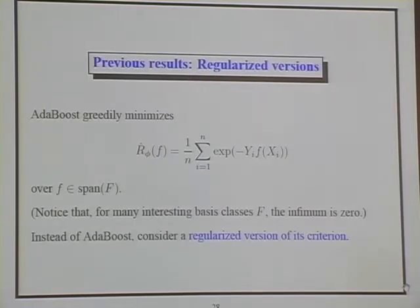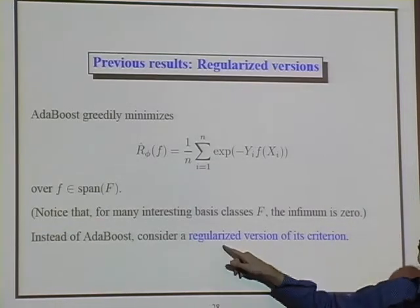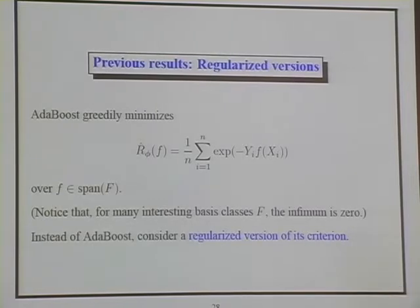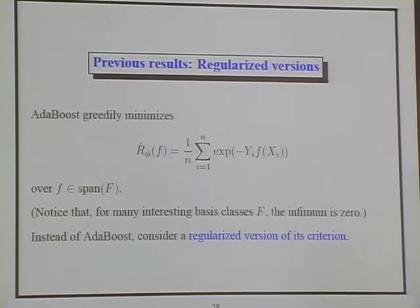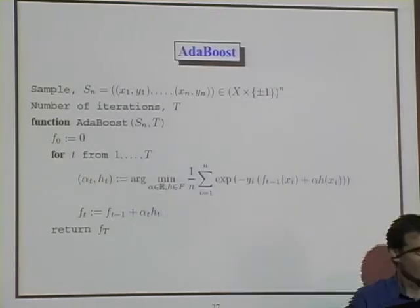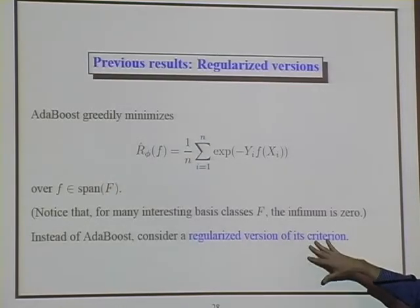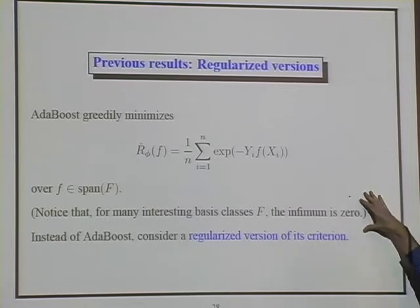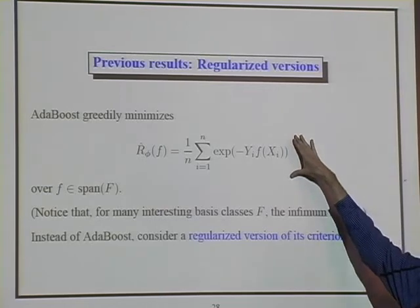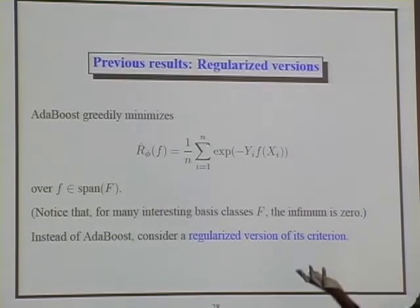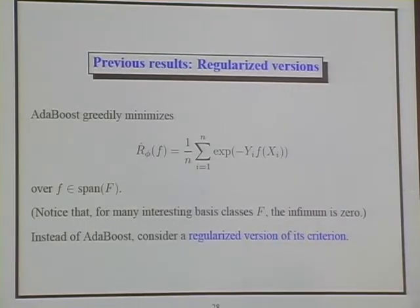One way of dealing with that issue is to work with a regularized version of the criterion: either add an explicit regularization term that penalizes large functions, or make sure the steps we take are small. There are analyses of regularized versions of Adaboost of this kind. One thing to point out: if we're working with some sensible class of basis functions, we can drive this criterion down to zero — if the class is rich enough that the span is dense in some big space. So we don't really want to optimize over the span; we need some regularization.